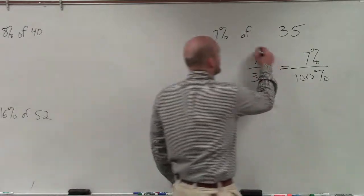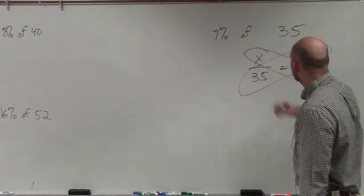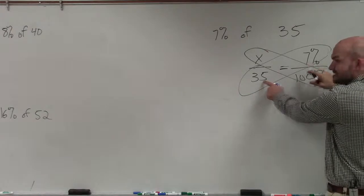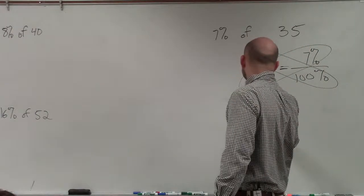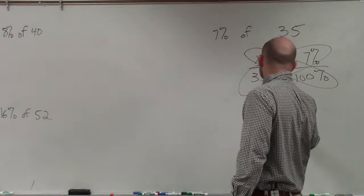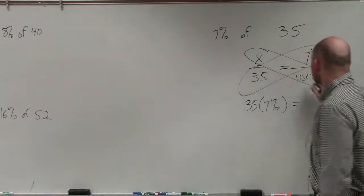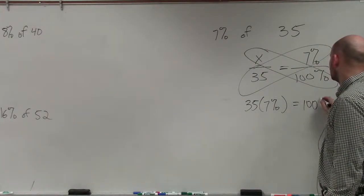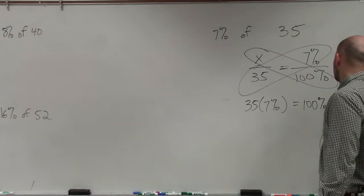So if you were to look at a cross product here, what you would see, ladies and gentlemen, is I'm basically multiplying 35 times 7% is equal to x times 100%.